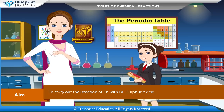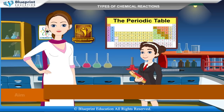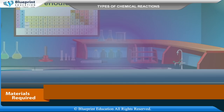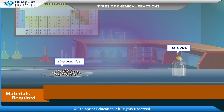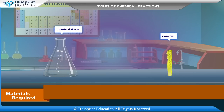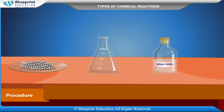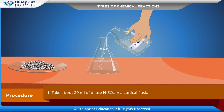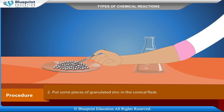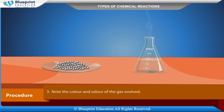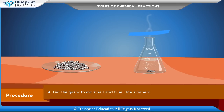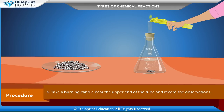Experiment C — Reaction of zinc with dilute sulphuric acid. Our aim is to carry out this reaction. Materials required: zinc granules, dilute H₂SO₄, conical flask, candle, cork fitted with a fine capillary tube, and tongs. Procedure: Take about 20 ml of dilute H₂SO₄ in a conical flask, add some pieces of granulated zinc, note the colour and odour of the gas evolved, and test it with moist red and blue litmus papers. Insert a cork fitted with a glass tube and bring a burning candle near the upper end.